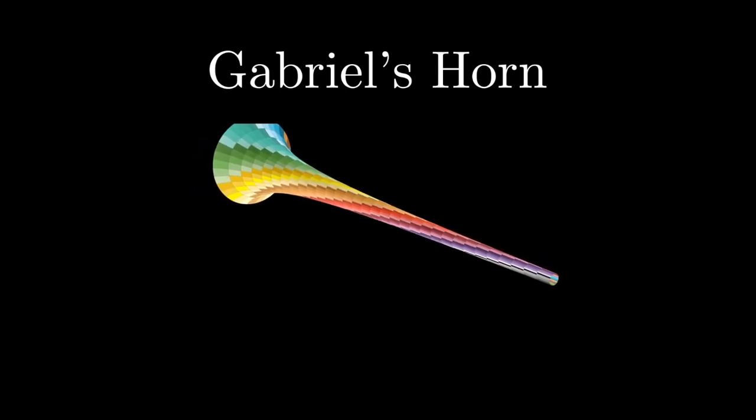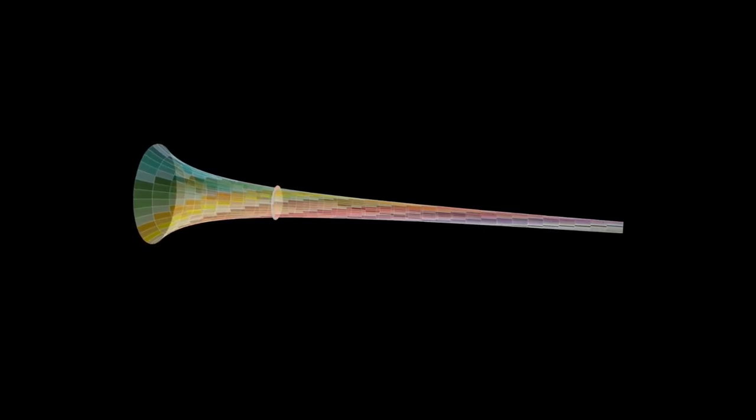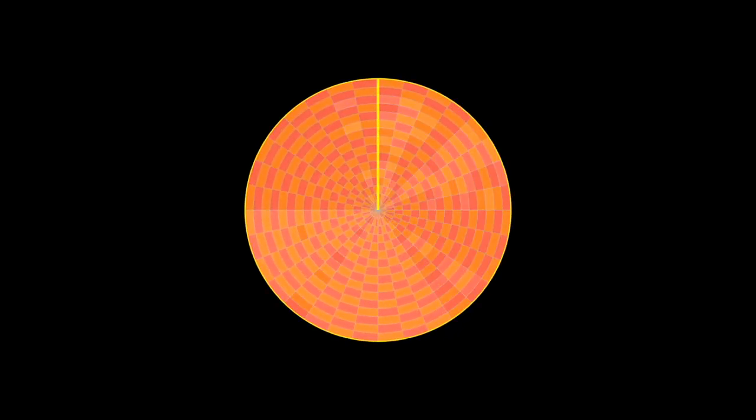To calculate the volume of Gabriel's horn, we're going to be using what's commonly called disk method. We're going to create small disks and sum them up. Let's look at one disk, like this. We need to find the volume of one disk and then we can just add a lot of these disks to find the volume of the entire object.